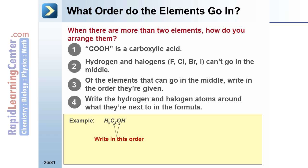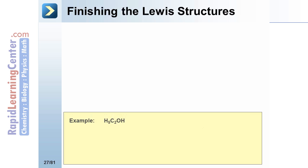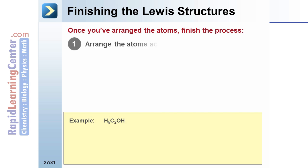Here's an example. The C and O go in the middle — write them in the order they are shown in the chemical formula. The H's must go on the outside; write them next to the atom they are written next to in the chemical formula. Once the atoms have been arranged according to the previous rules, finish the Lewis structure.